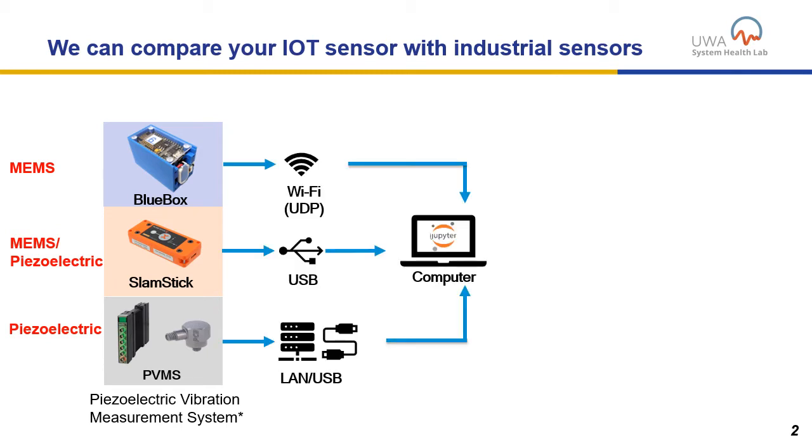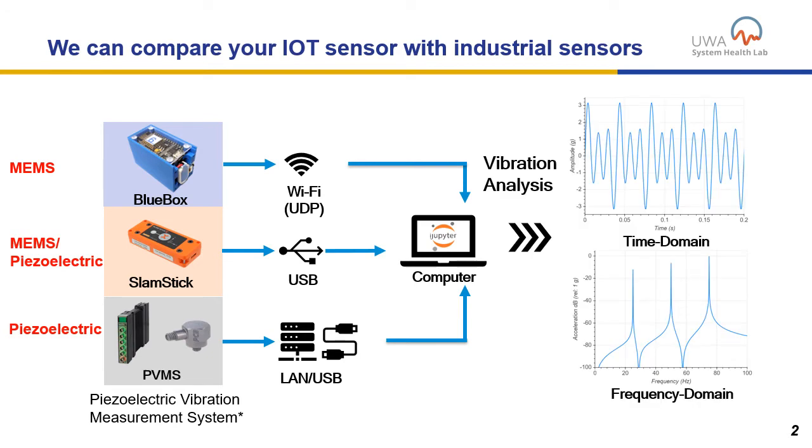And we post-process system data to get time domain and frequency domain data, because this is where the real information and the peaks, the root mean square values, mean something in condition monitoring.